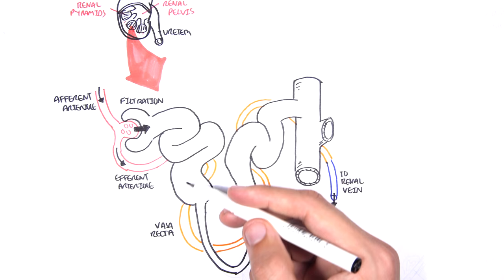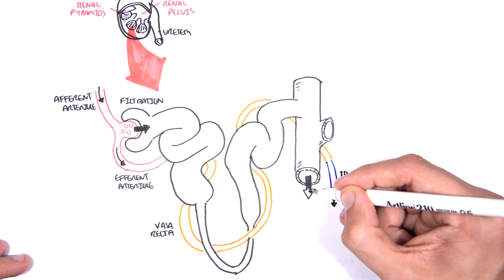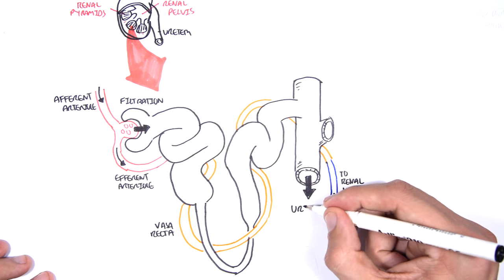The filtrate, which is inside the nephron, is what we pee out. It's our urine output.